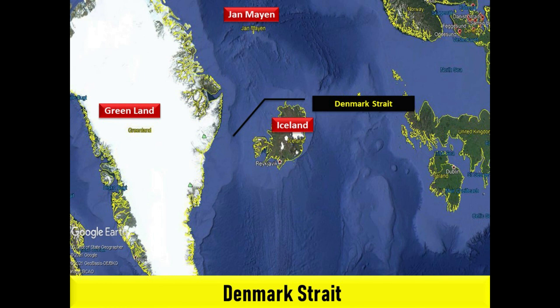The Denmark Strait, also known as the Greenland Strait, is an oceanic strait between Greenland to its northwest and Iceland to its southeast. The Norwegian island of Jan Mayen lies northeast of the strait.